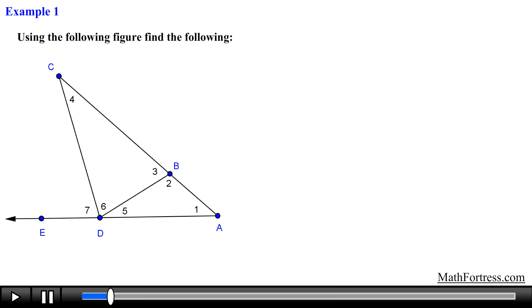Using the following figure find the following: name the vertex and the sides of the following angles - angle 4, angle 1, and angle 6. We are asked to identify the vertex and the sides of the given angles. Let's start with the first angle.